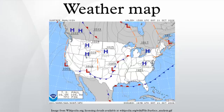Maps using isotherms show temperature gradients, which can help locate weather fronts. Isotach maps, analyzing lines of equal wind speed on a constant pressure surface of 300 or 250 hectopascals, show where the jet stream is located.